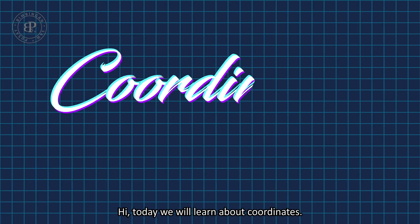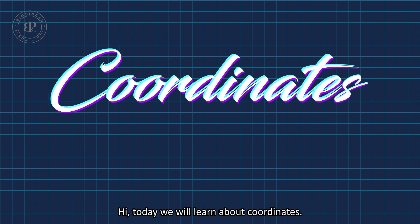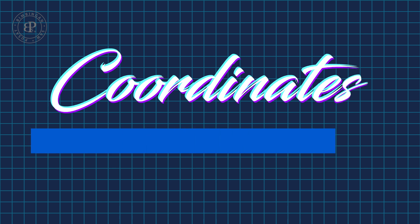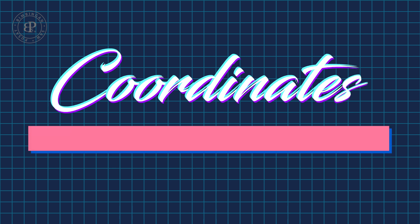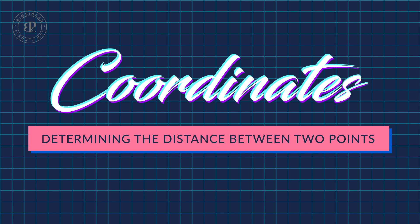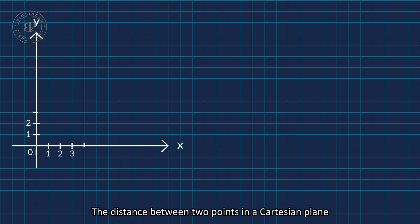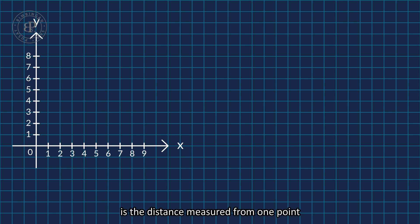Hi, today we will learn about coordinates. The distance between two points in a Cartesian plane is the distance measured from one point to another along the straight line.